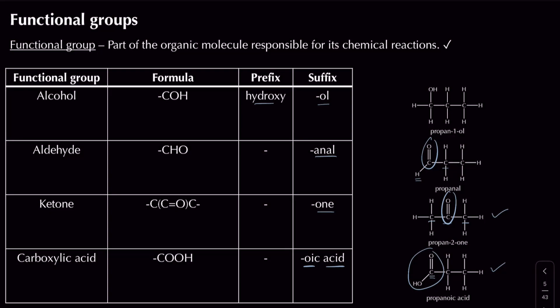If we have a C=O double bond at the end of the chain, that's an aldehyde — for example propanal. If we have an OH attached to a carbon atom with no C=O double bond on that same carbon, we have an alcohol — for example propan-1-ol. Those are our more complicated functional groups; you'll come across many more like amines and esters in later topics.